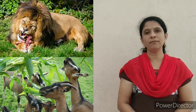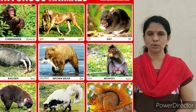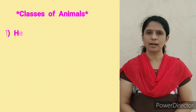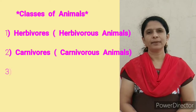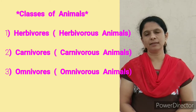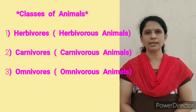So now all of you are thinking: what do animals eat? Animals have different food habits, and according to their eating habits, animals can be divided into 3 classes or categories. The first one is herbivores, also called herbivorous animals. The next one is carnivores, also called carnivorous animals. And the third one is omnivores, also called omnivorous animals.